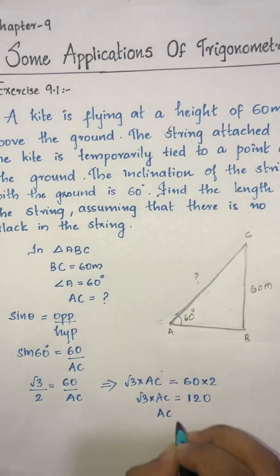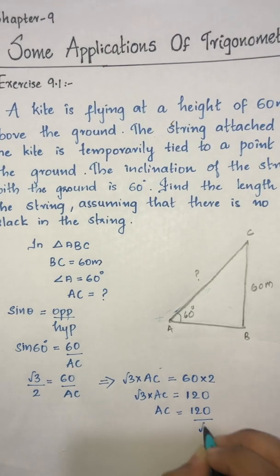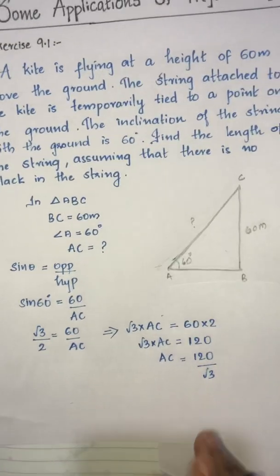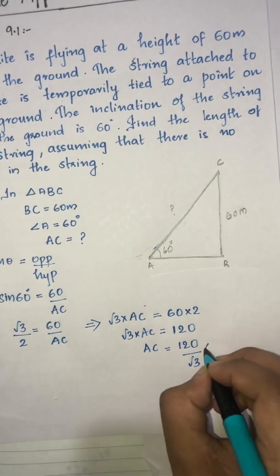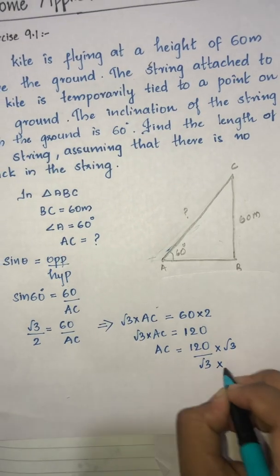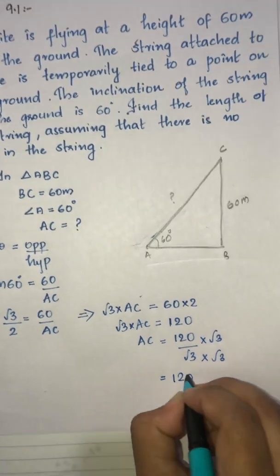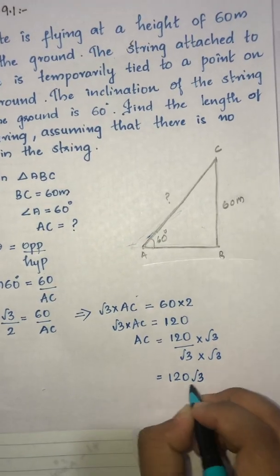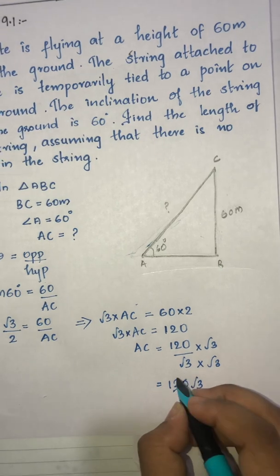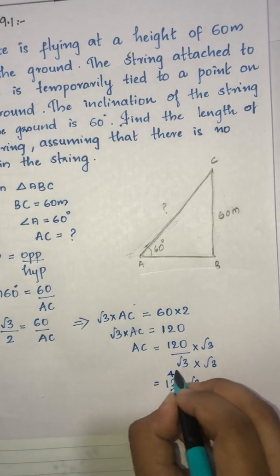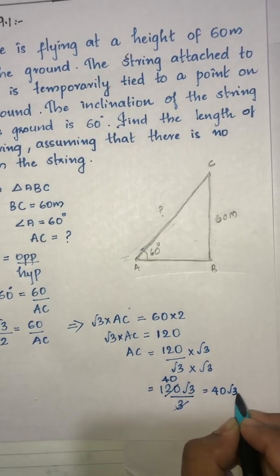AC is equal to 120 divided by root 3. Now let us rationalize by multiplying both numerator and denominator by root 3. This gives 120 root 3 divided by 3, which simplifies to 40 root 3 meters.